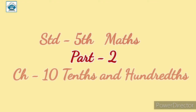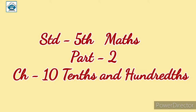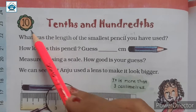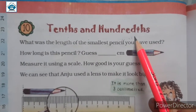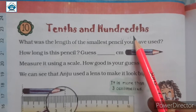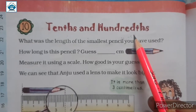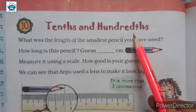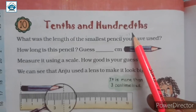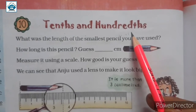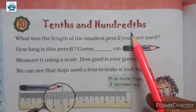Good morning students. Today we will continue with chapter number 10, i.e. 10s and 100s. Now come to today's topic. Today's topic is introduction to decimal numbers, and we will also know about two units of length: the first one is centimeter and the second one is millimeter.